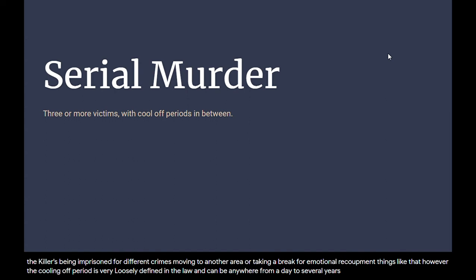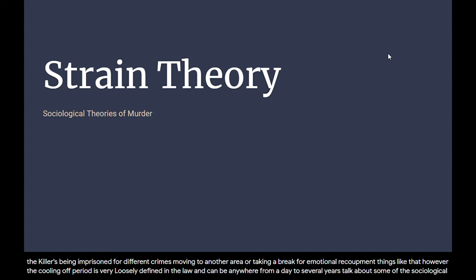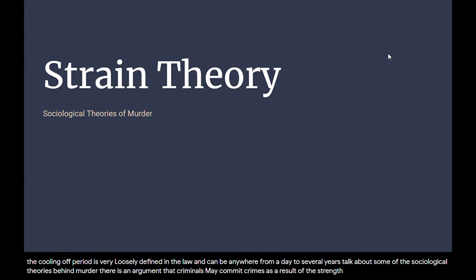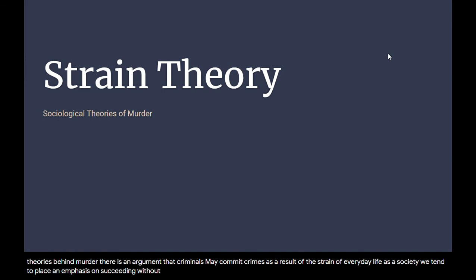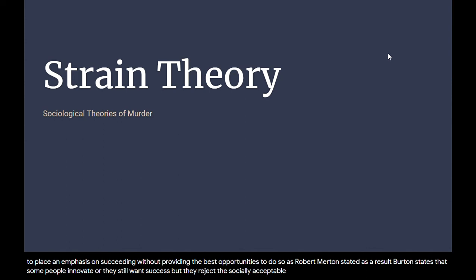Now let's talk about some of the sociological theories behind murder. There is an argument that criminals may commit crimes as a result of the strain of everyday life. As a society, we tend to place an emphasis on succeeding without providing the best opportunities to do so, as Robert Merton stated. As a result, Merton states that some people innovate — they still want success, but they reject the socially acceptable means to obtain it and start doing their own thing.